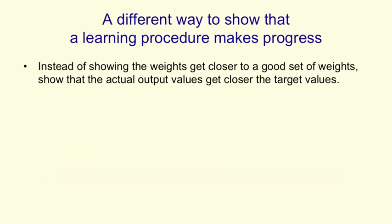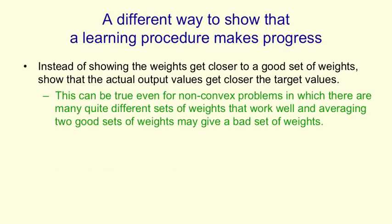Instead of showing that the weights get closer to a good set of weights, we're going to show that the actual output values get closer to the target output values. This can be true even for non-convex problems in which averaging the weights of two good solutions does not give you a good solution. It's not true for perceptron learning — the outputs as a whole can get further away from the target outputs, even though the weights are getting closer to good sets of weights.